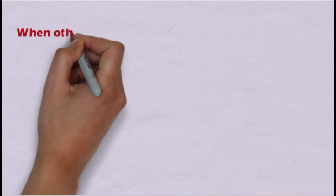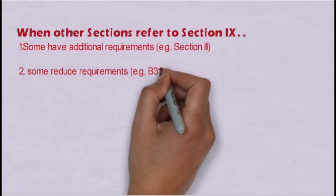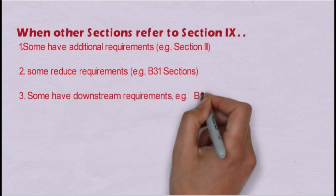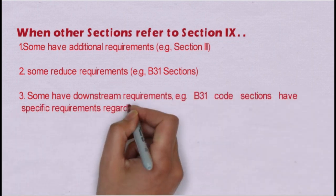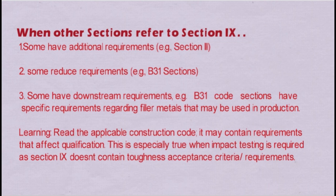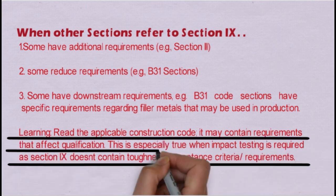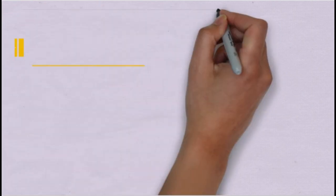When other sections refer to Section 9, we call it a reference code only. It has been referred to by construction codes, some of which have additional requirements — like Section 3 or Section 8 — and some have reduced requirements, like B31 sections. Some have different requirements; for example, B31 sections have specific requirements regarding filler metal that may be used in production. So the key learning is to read the applicable construction code, as it may contain requirements that affect qualification, especially when impact testing is required, since Section 9 does not contain toughness acceptance criteria or requirements.